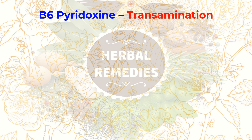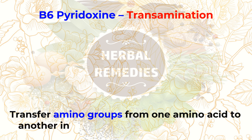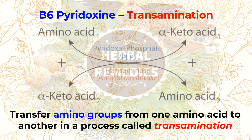Pyridoxal phosphate (PLP) can help transfer amino groups from one amino acid to another in a process called transamination. By moving amino acids in this way, PLP can help make non-essential amino acids in the body, along with other nutrients.